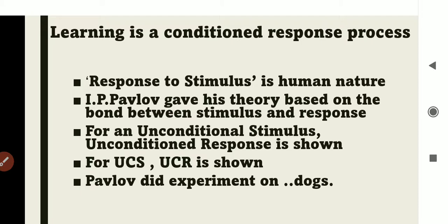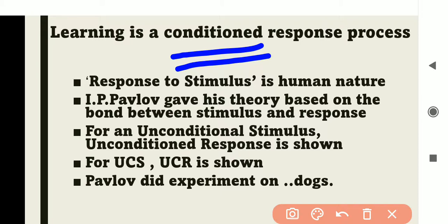Manav ki pravriti udhipak ke prati anukriya karna hai — the tendency of a human is to respond to a stimulus. Pavlov's theory is also called anubandhan siddhant or Type S anubandhan. According to Pavlov, whatever a human being or an animal shows as a response, it is due to some stimulus. There is some stimulus present, and based on that stimulus only the response is shown. This theory is based on that stimulus-response bonding.